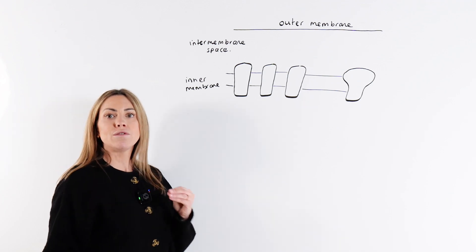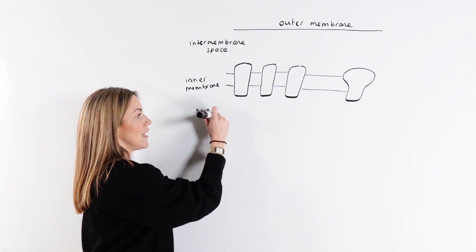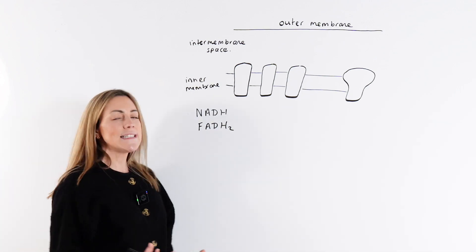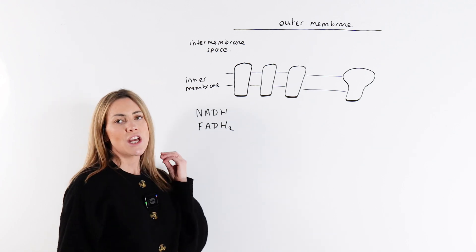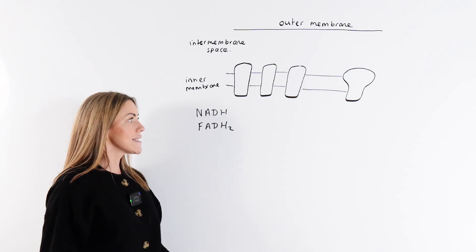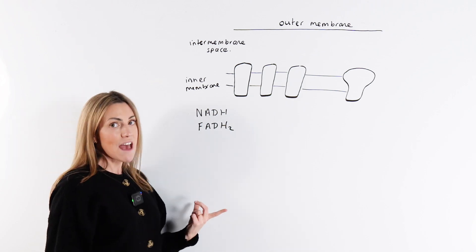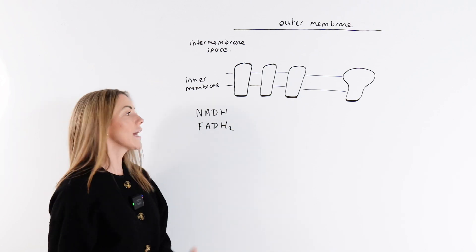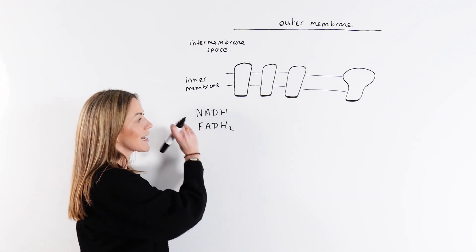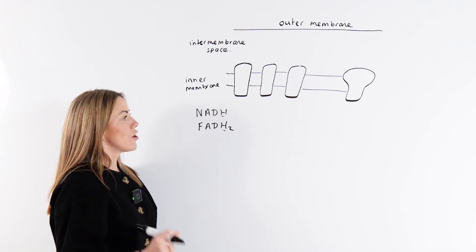Remember all of those reduced coenzymes — NADH and FADH. We've been making NADH and FADH throughout the other stages of aerobic respiration: glycolysis made NADH, the Krebs cycle made NADH and FADH, and the link reaction made NADH. These reduced coenzymes are going to carry the hydrogen to the inner mitochondrial membrane.